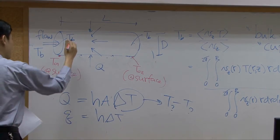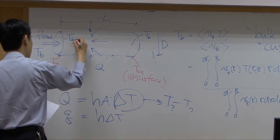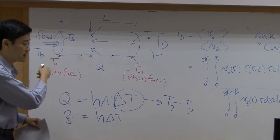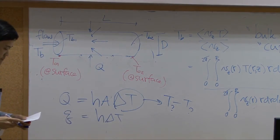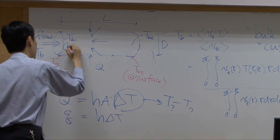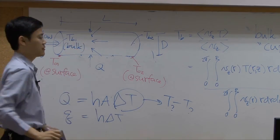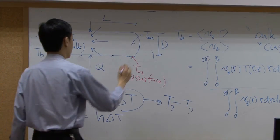So if I call this one TB1 at the inlet and TB2 at the outlet. This one is at bulk. We call this one bulk fluid.